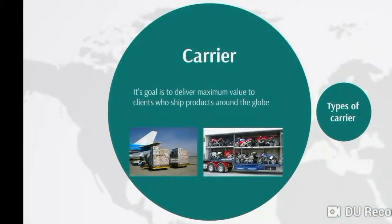Carrier. A carrier is defined as something by which clients ship products around the globe. A carrier can be a truck, motor, or aeroplane, etc. Its goal is to deliver maximum value to clients. The main difference between a shipper and a carrier is that a shipper is more responsible for sending goods than a carrier.